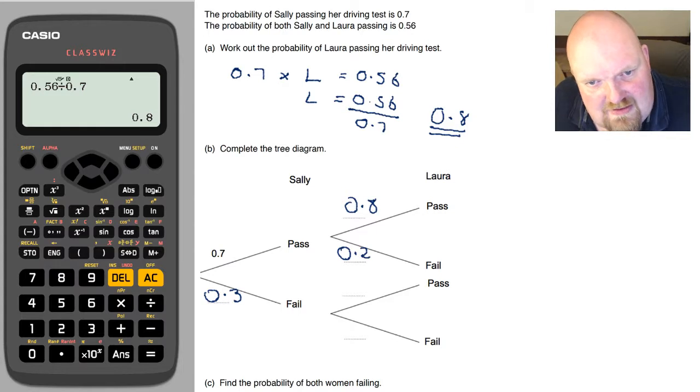which means that it must be 0.2 for her to fail. And, of course, in this particular scenario, we're just going to repeat that. 0.8, 0.2.